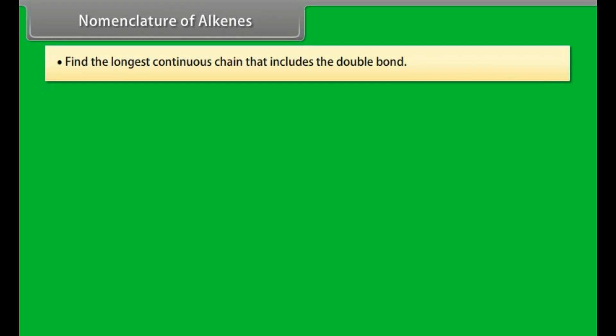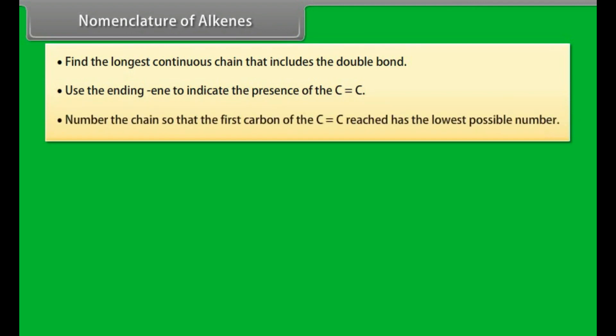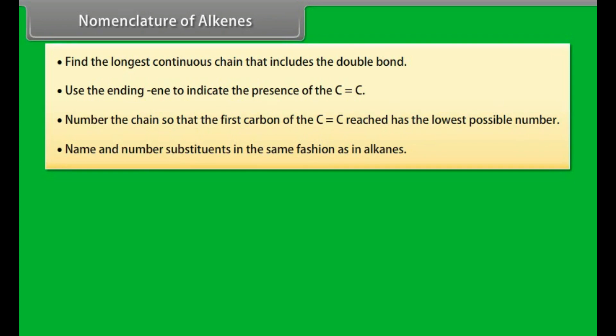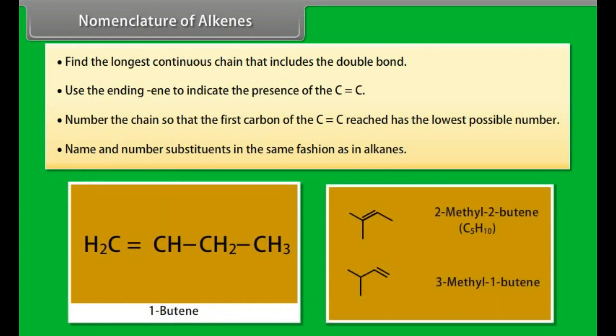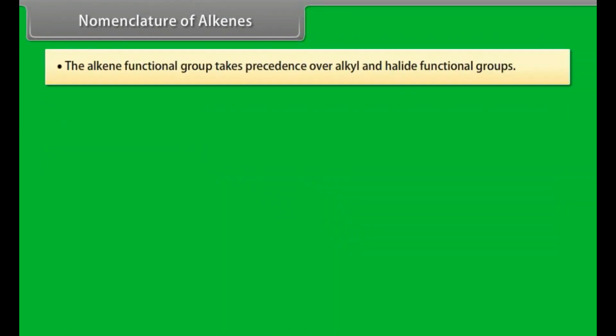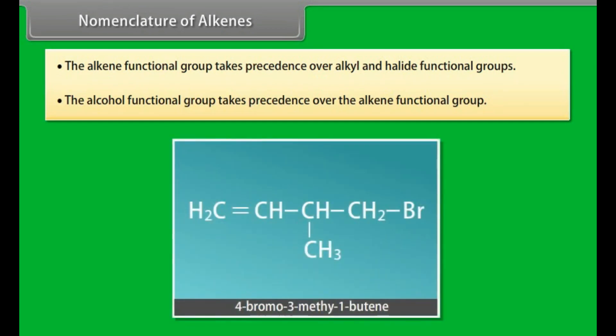Nomenclature of alkenes. Step 1: Find the longest continuous chain that includes the double bond. Step 2: Use the ending -ene to indicate the presence of carbon-carbon double bond. Step 3: Number the chain so that the first carbon of the carbon-carbon double bond has the lowest possible number. Step 4: Name and number substituents in the same fashion as in alkanes. This is 1-butene and these are 2-methyl-2-butene and 3-methyl-1-butene. Step 5: The alkene functional group takes precedence over alkyl and halide functional groups. Step 6: The alcohol functional group takes precedence over the alkene functional group. 4-bromo-3-methyl-1-butene.